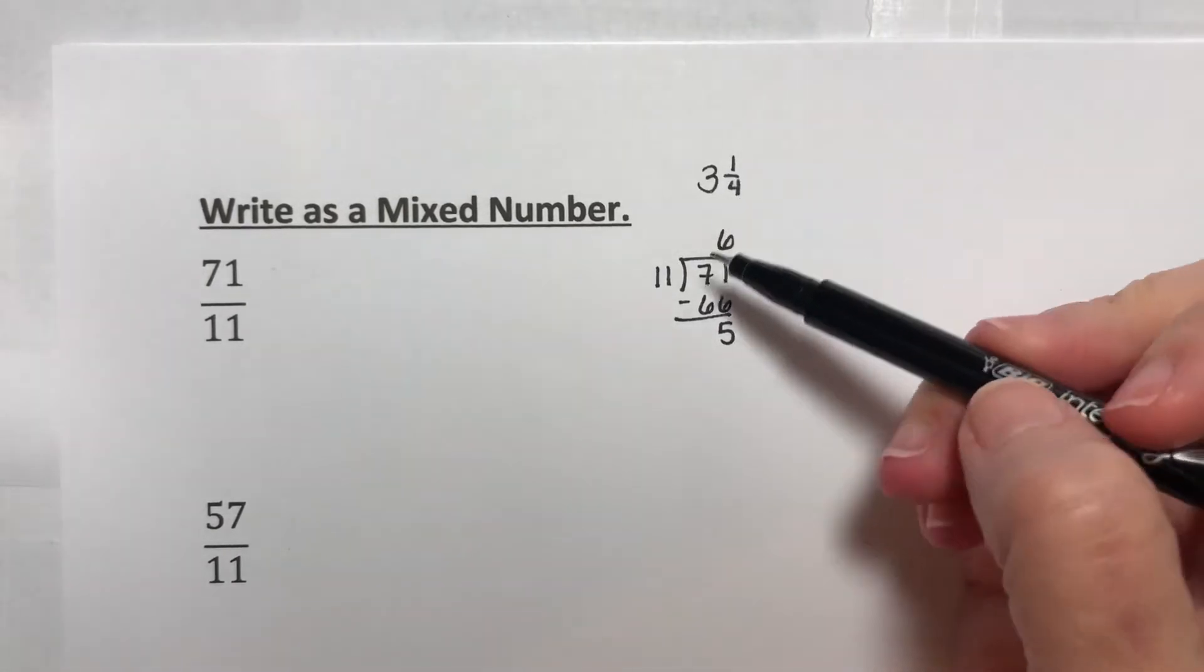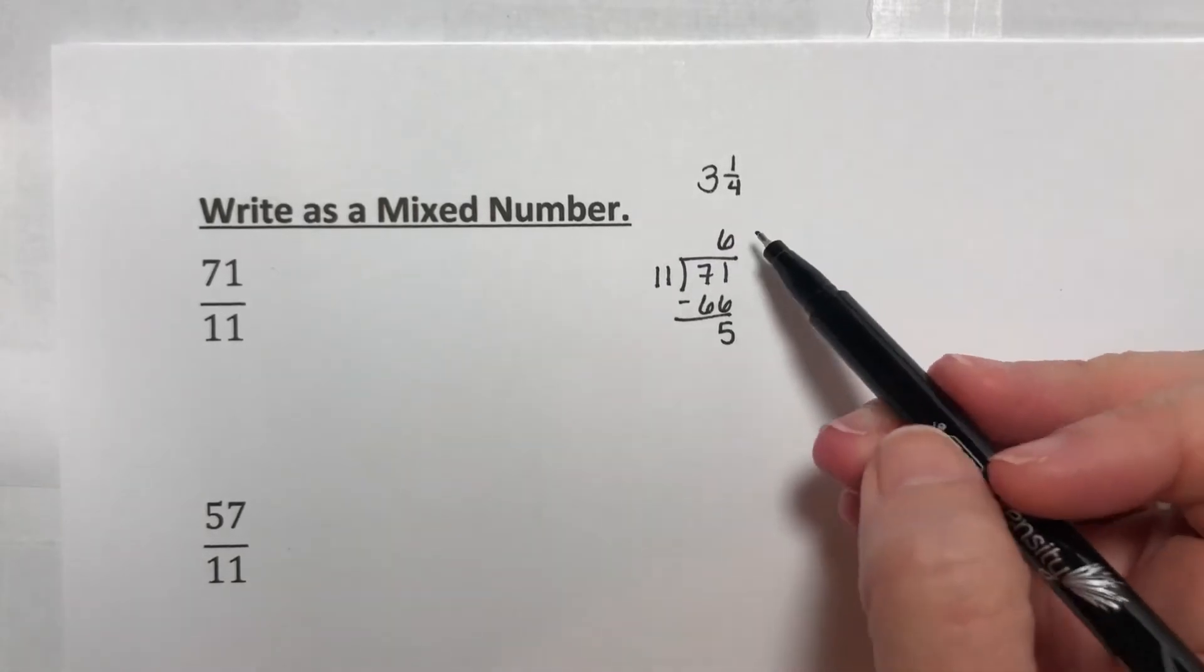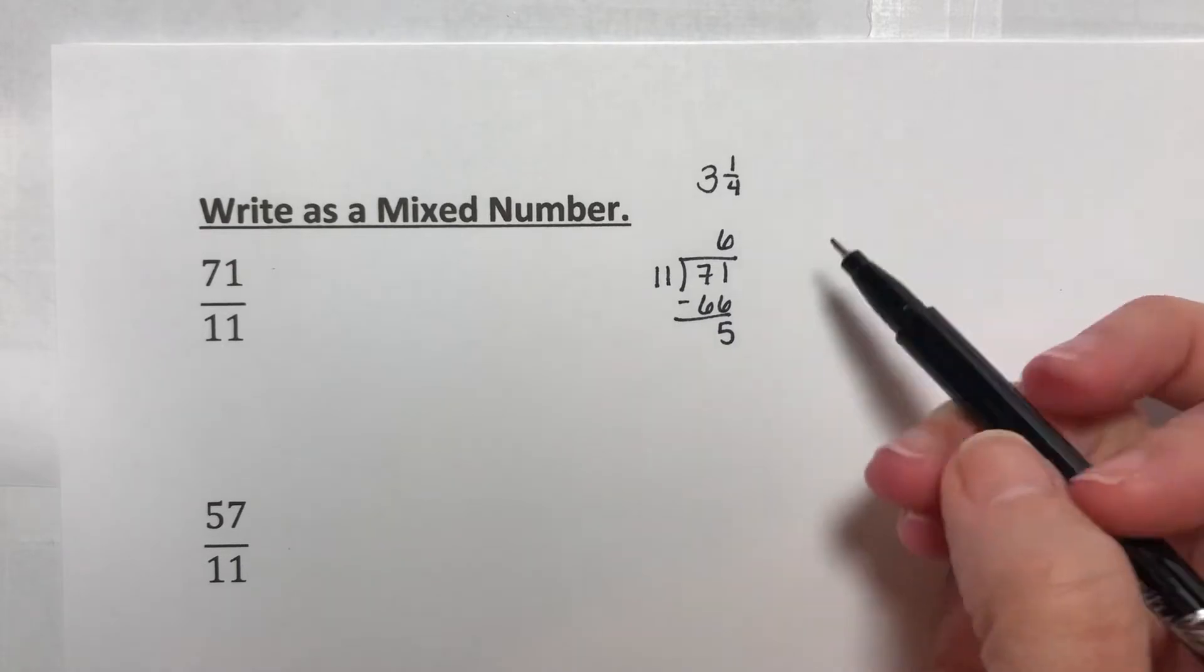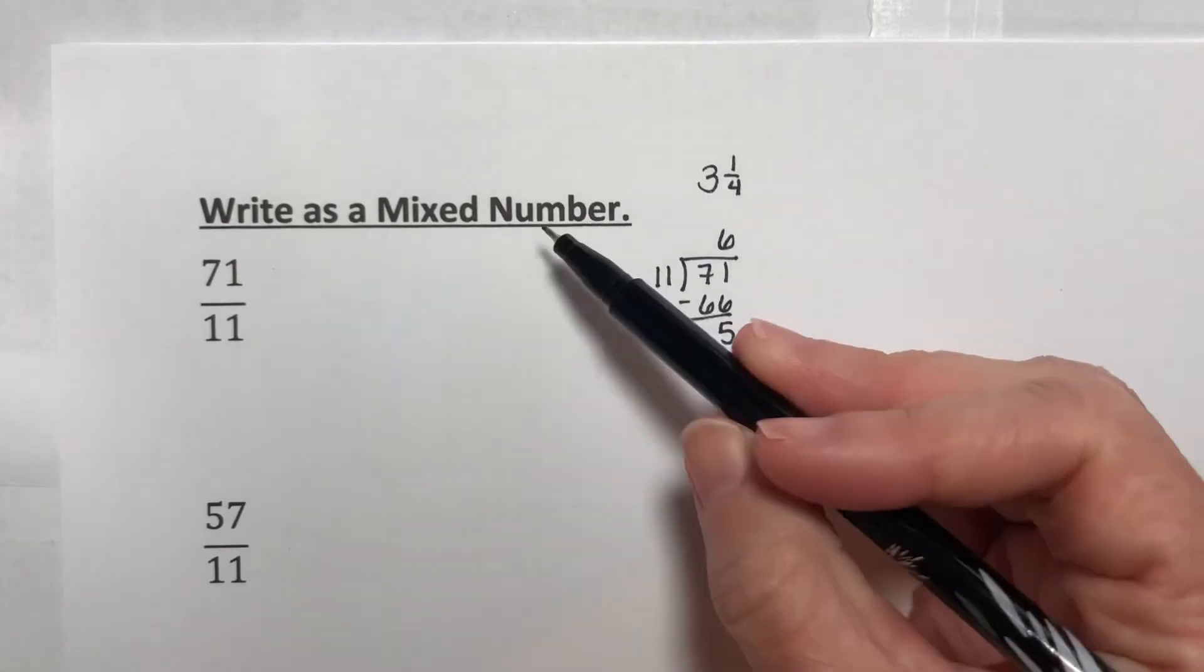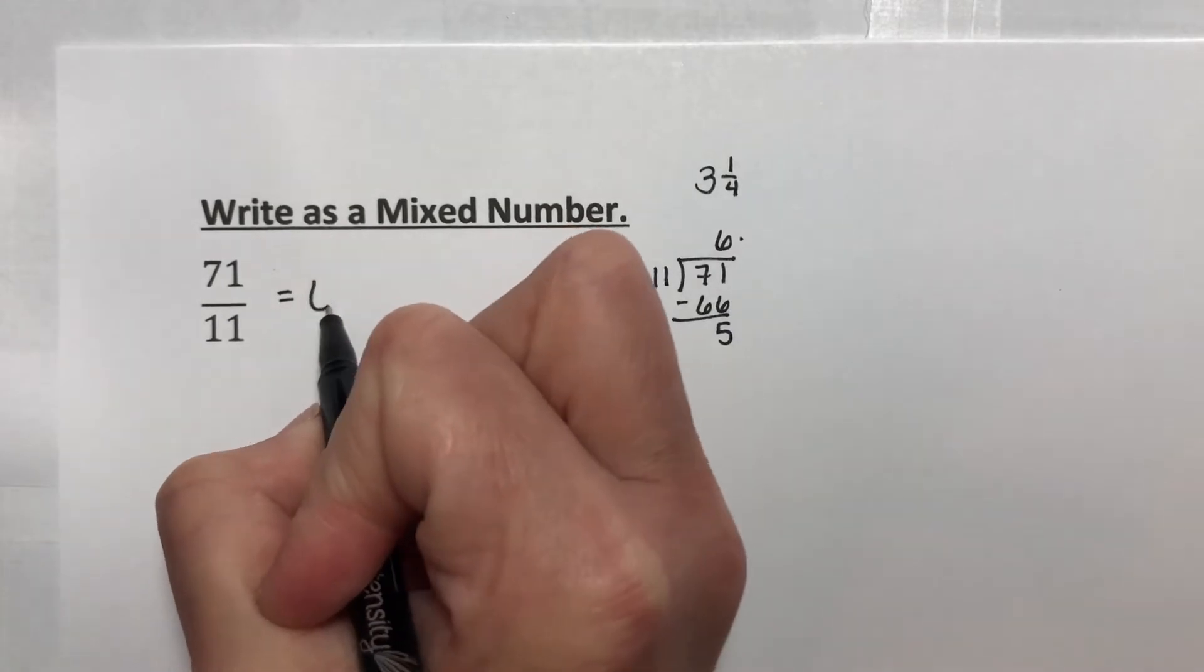So one way of talking about this is 71 divided by 11 is 6 remainder 5. That's the first way we learn to say it. The other way, when we go to a mixed number, you take this. This is the whole number part, 6.